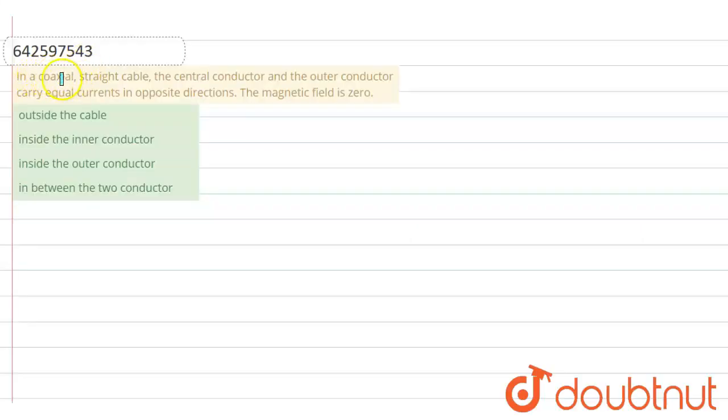In this problem we have given in a coaxial straight cable the central conductor and the outer conductor carry equal currents in opposite direction. The magnetic field is zero at which place.